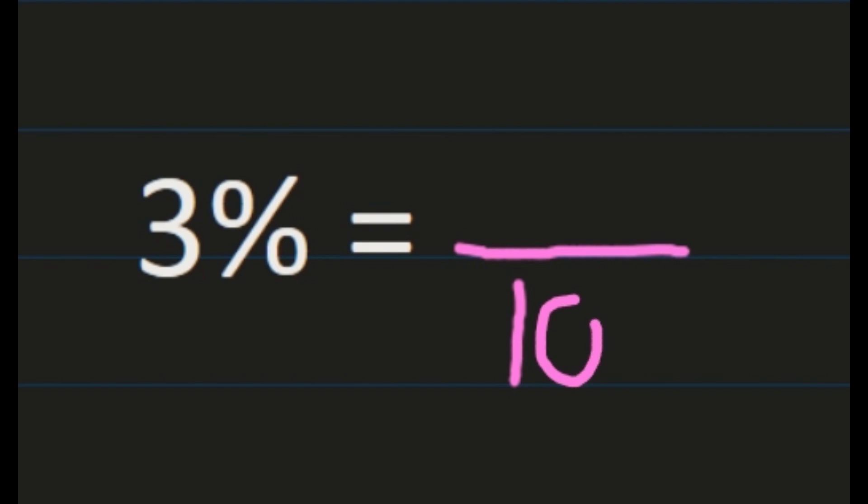So with 3%, we're going to use a denominator of 100, and our 3 is our numerator. The only thing you have to ask yourself then is, can we simplify? Well, 3 hundredths can't be simplified, so 3% equals 3 hundredths.